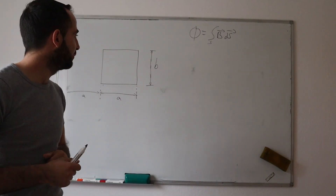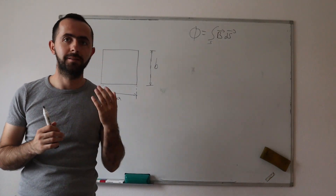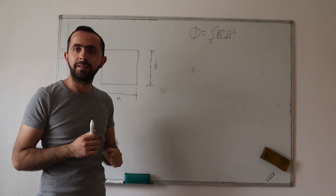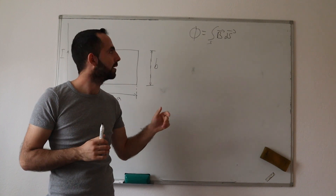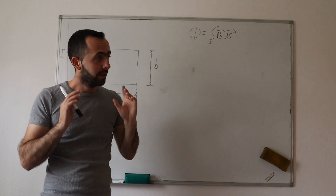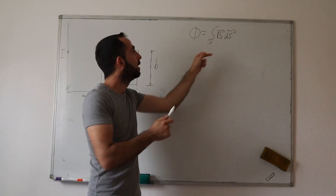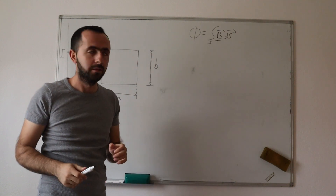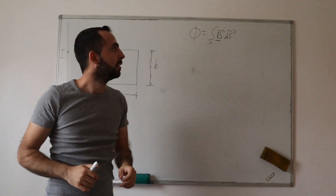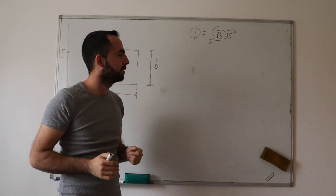Assalamu alaikum and greetings! In this video we will calculate a magnetic flux. What is a magnetic flux? The formula for calculating magnetic flux is written here, which says that magnetic flux is equal to the integral of magnetic flux density times the elementary surface. From this formula we can see that our magnetic flux represents the field lines flowing through the total surface S — the total magnetic flux through a given surface S.